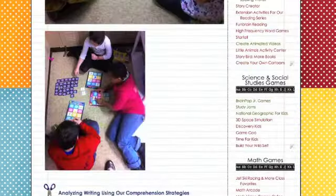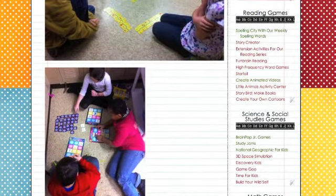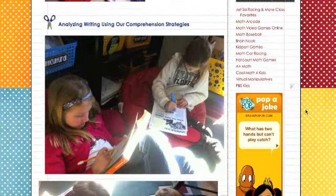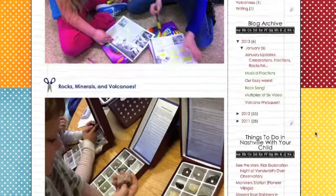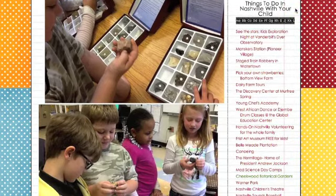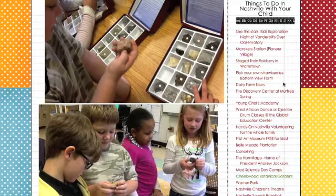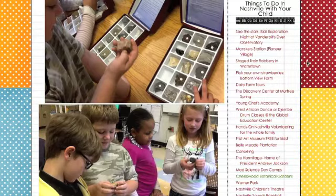I'm going to scroll back up and show you some other resources. I include a whole section of games for the kids — feel free to use my games on your website too. These are things I found on the internet: reading games, science and social studies, and math, broken down by categories. BrainPop is a great thing to stick on your website — it changes daily. I also have a section called 'Things to do with your child,' which is really important for building background experiences. I try to include free things geared for kids, like a special night at the Dyer Observatory at Vanderbilt, pick-your-own strawberries, and the Frist Art Museum, which is free. These are great resources for parents to check out on your class website.